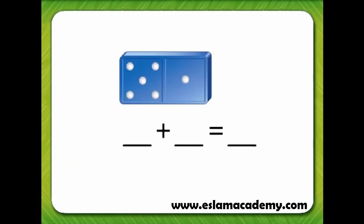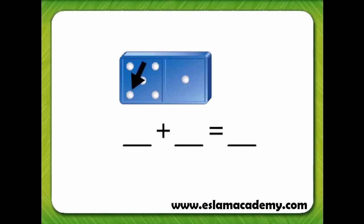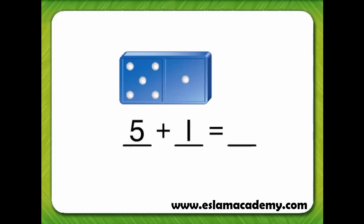Let's try it again with another domino. How many dots are on this end of the domino? One, two, three, four, five. How many dots are on the other end of the domino? One. If we add across, what is the sum of the dots on the domino? Six.